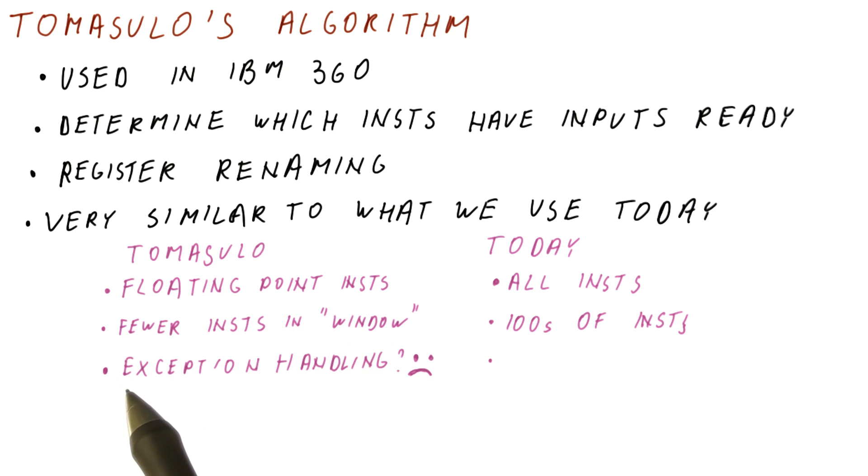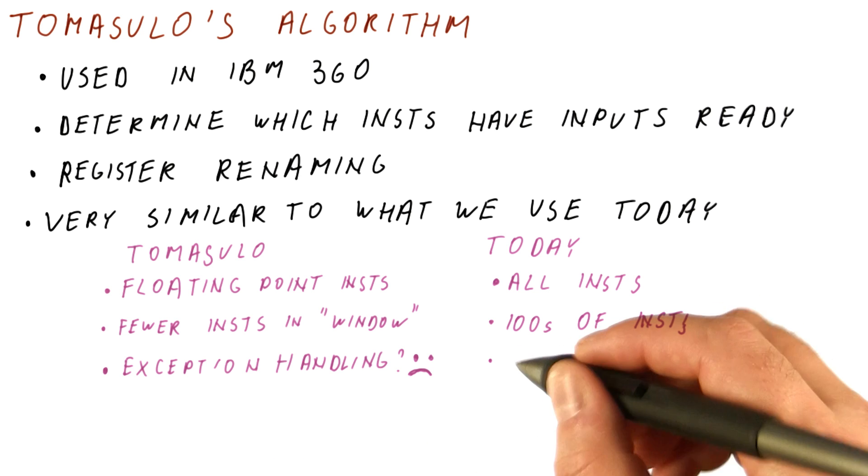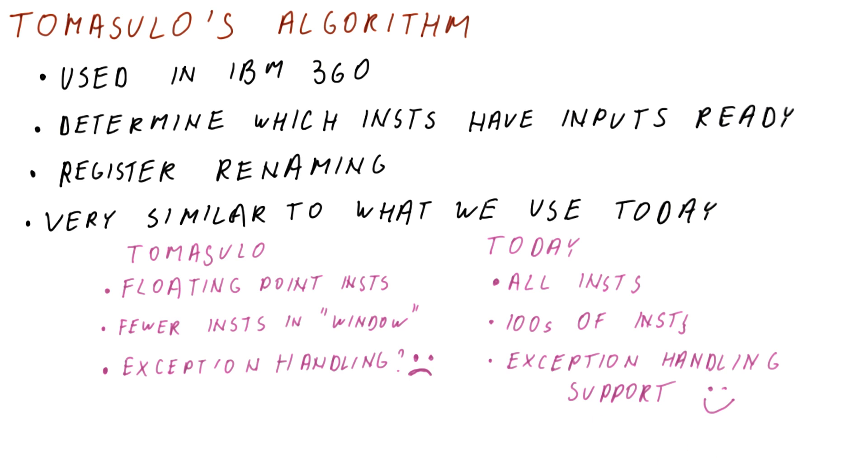In the olden days, exception handling for floating-point instructions was not such a big problem because they were only considering execution of floating-point extensive applications, and those would be programmed and you would usually run one program at a time. If there is an exception, you could do some drastic measures. Today, processors include explicit support for exception handling that we will see later.